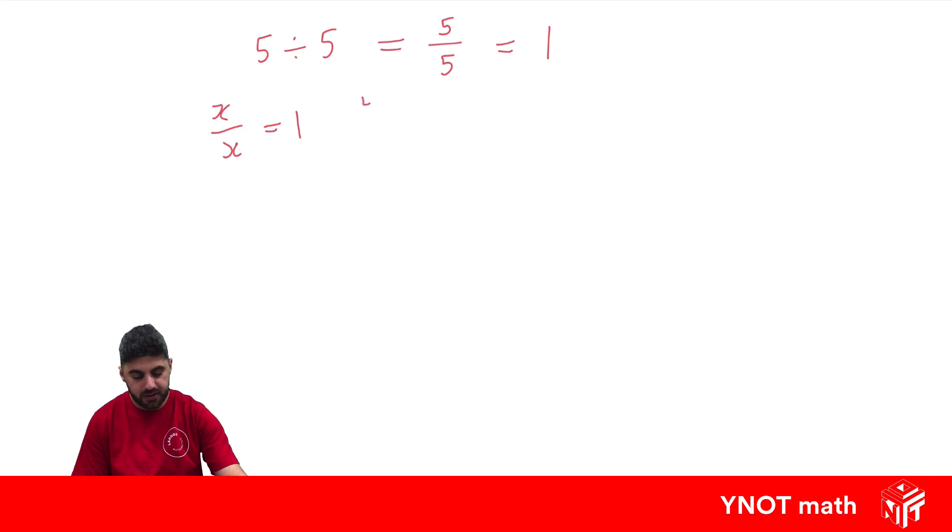So x divided by x is 1, y divided by y is 1, a divided by a is 1. x divided by y is just x divided by y.